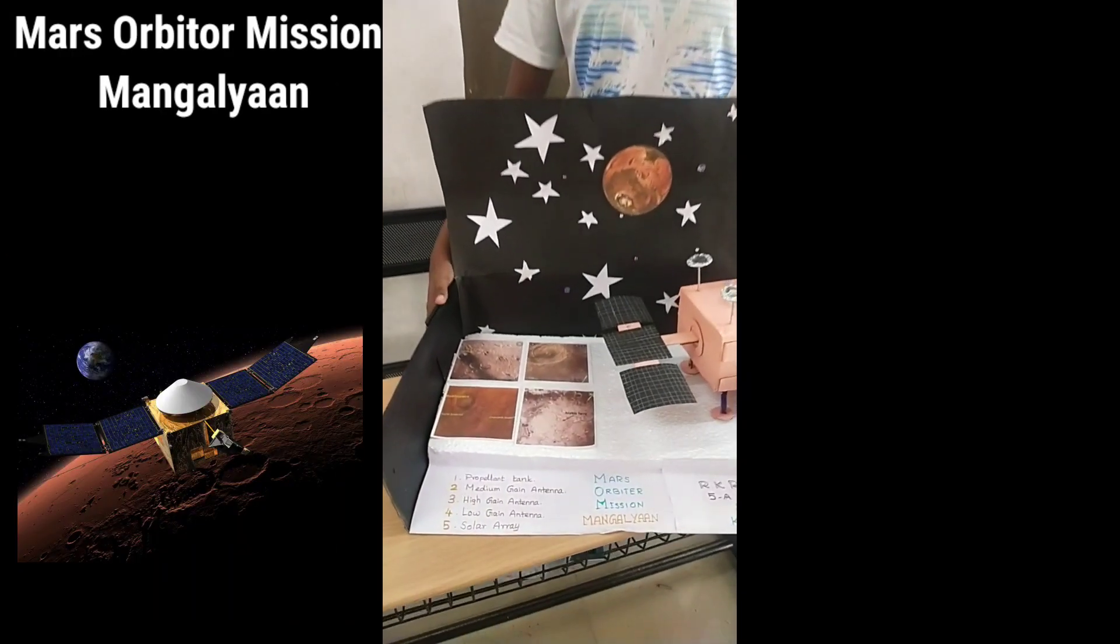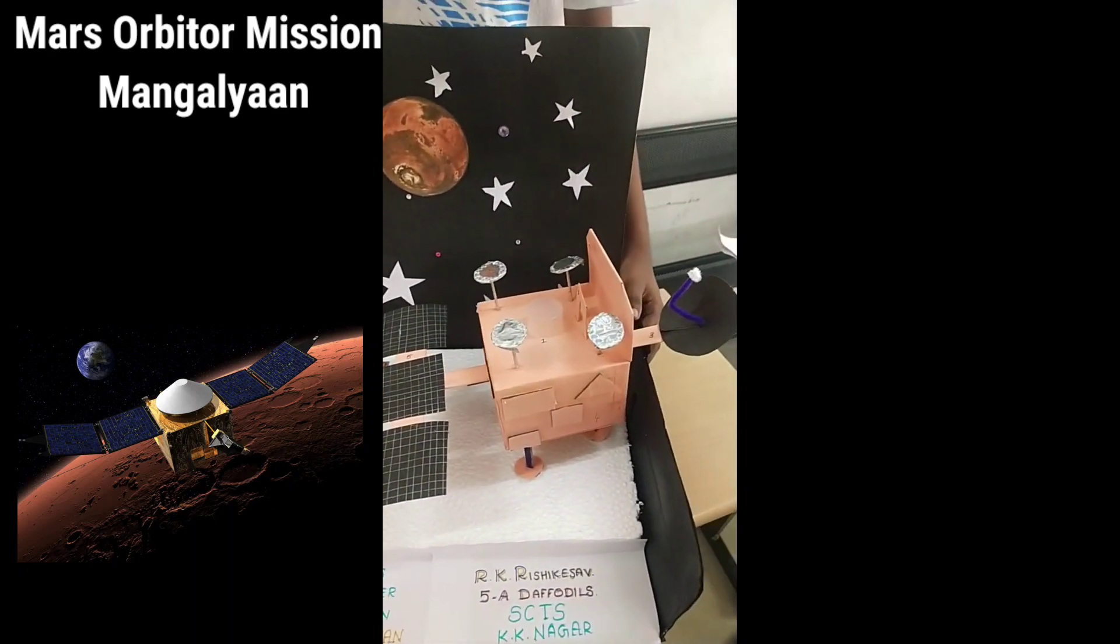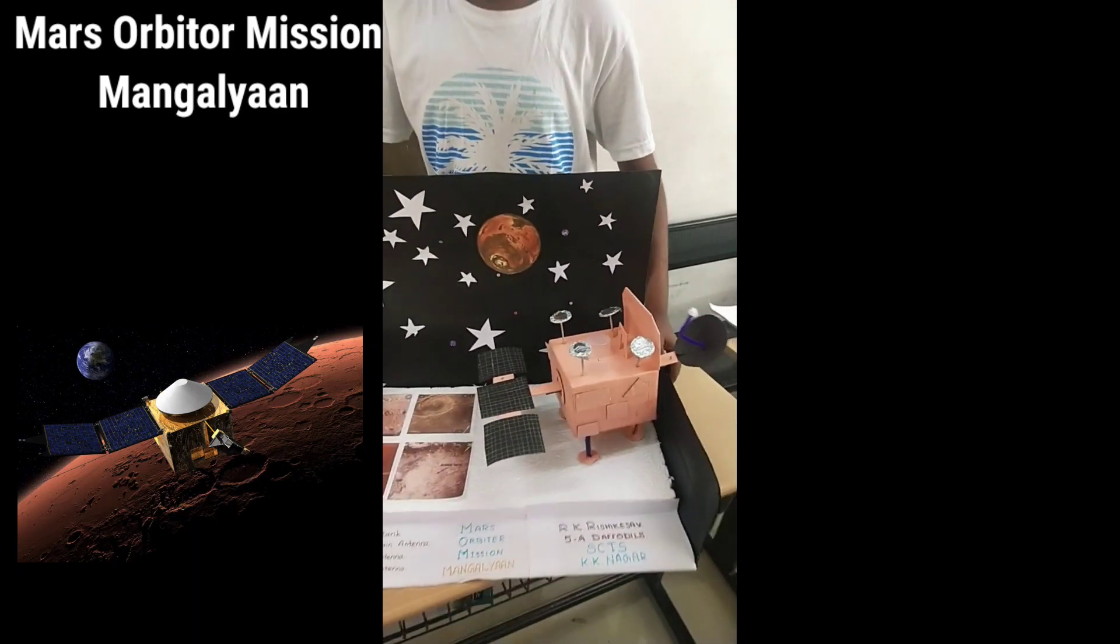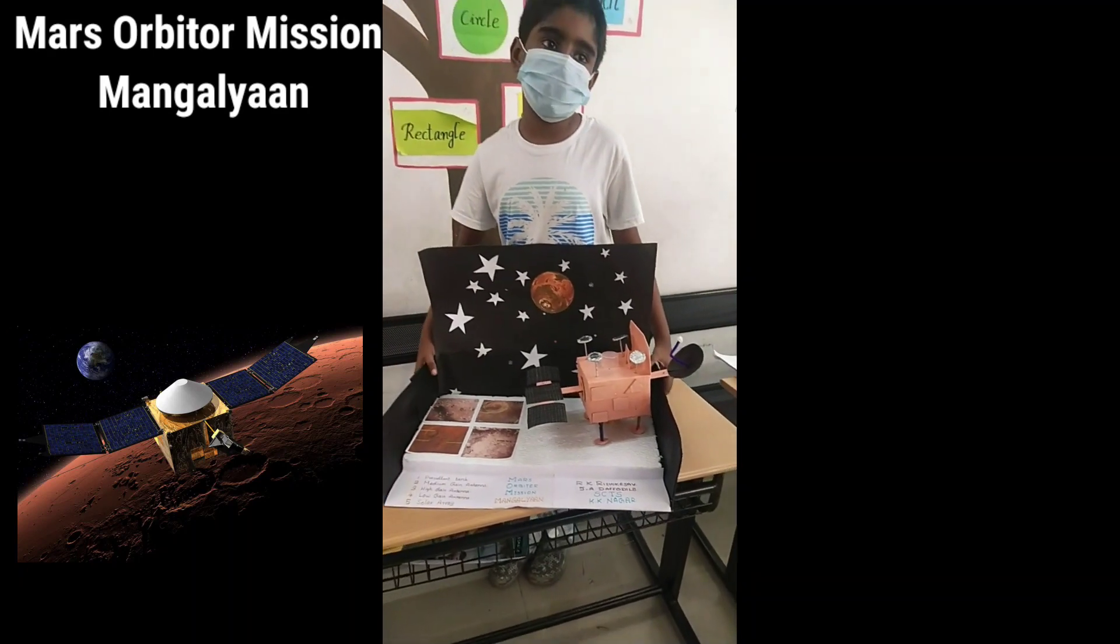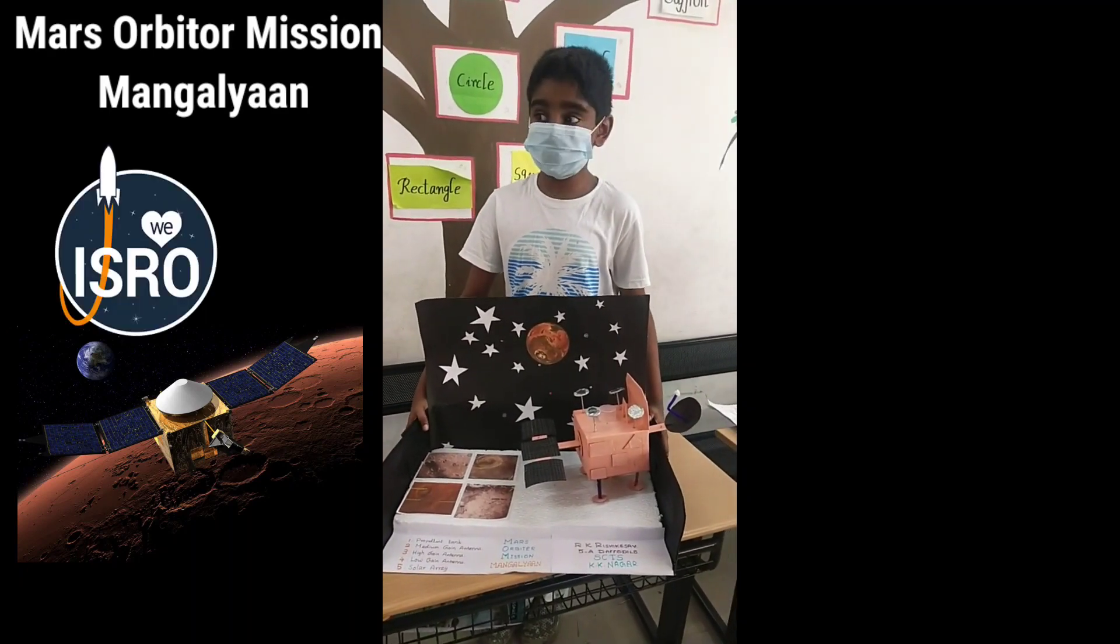Here comes our Mars orbiter machine Mangalyaan. It was actually launched on 5th November 2013 by ISRO.